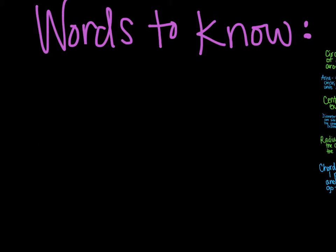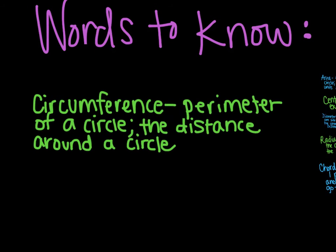Words to know, there are a lot of them. So here we go. A circumference is the perimeter of a circle, the distance around a circle.